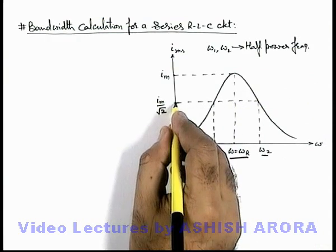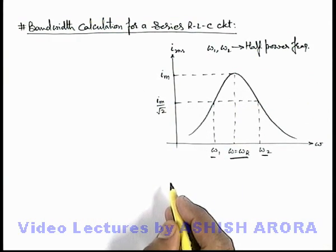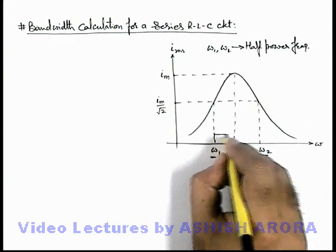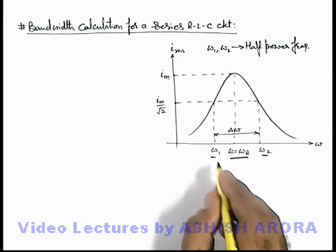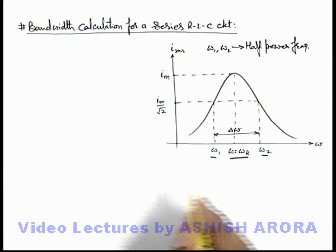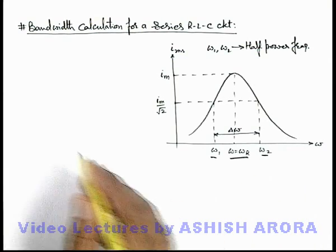When the current in circuit is 1 by root 2 times the maximum, if we are required to calculate the range of these frequencies delta omega, then we need to calculate the values of omega 1 and omega 2. Let's calculate it.